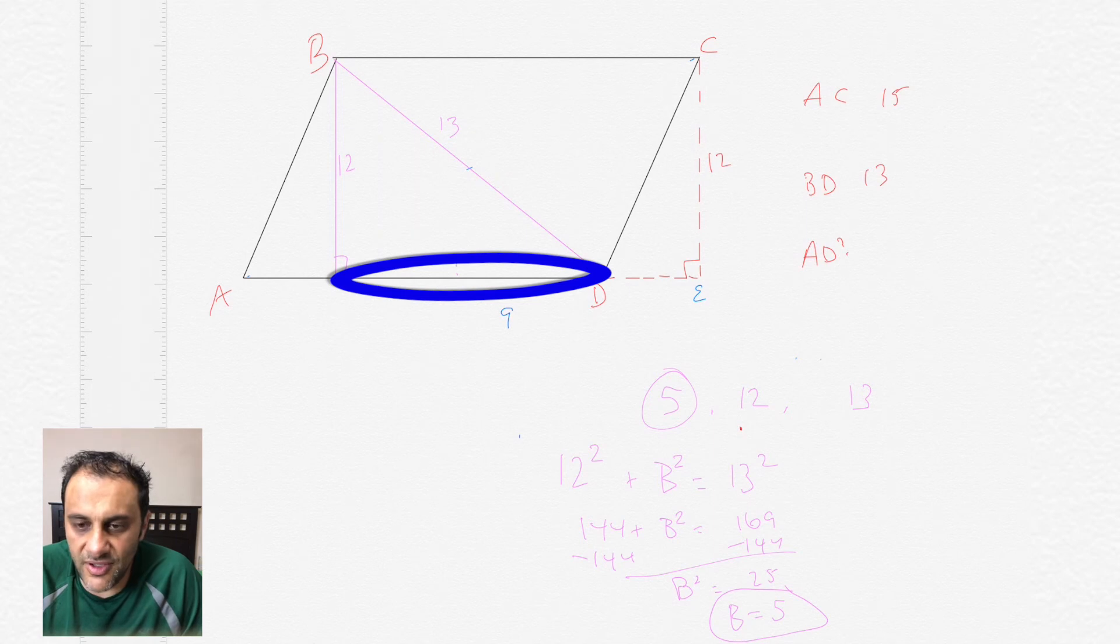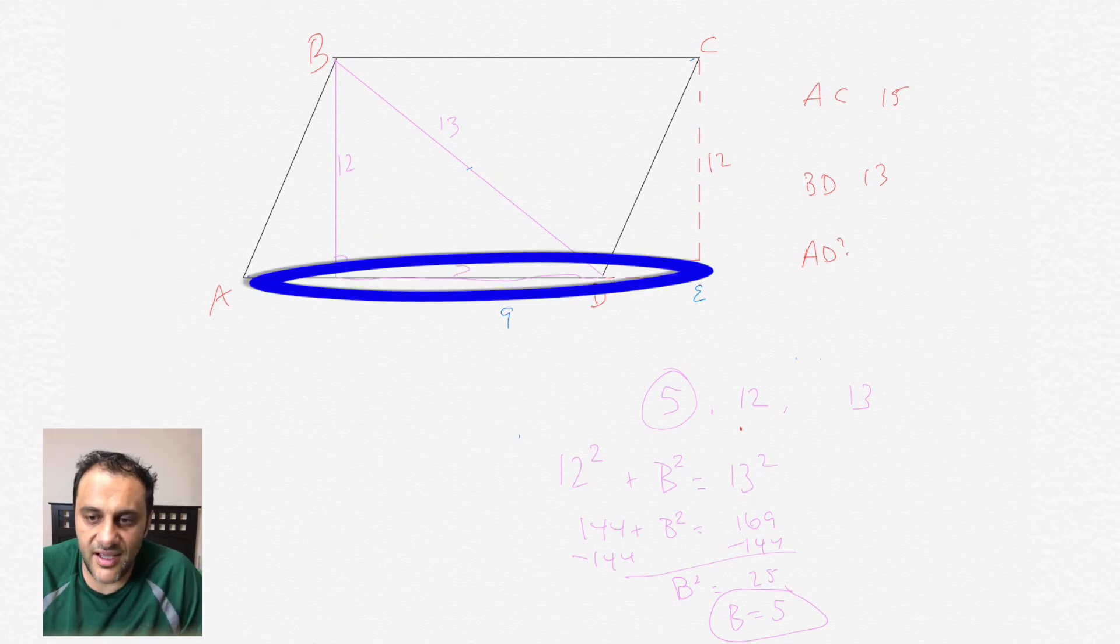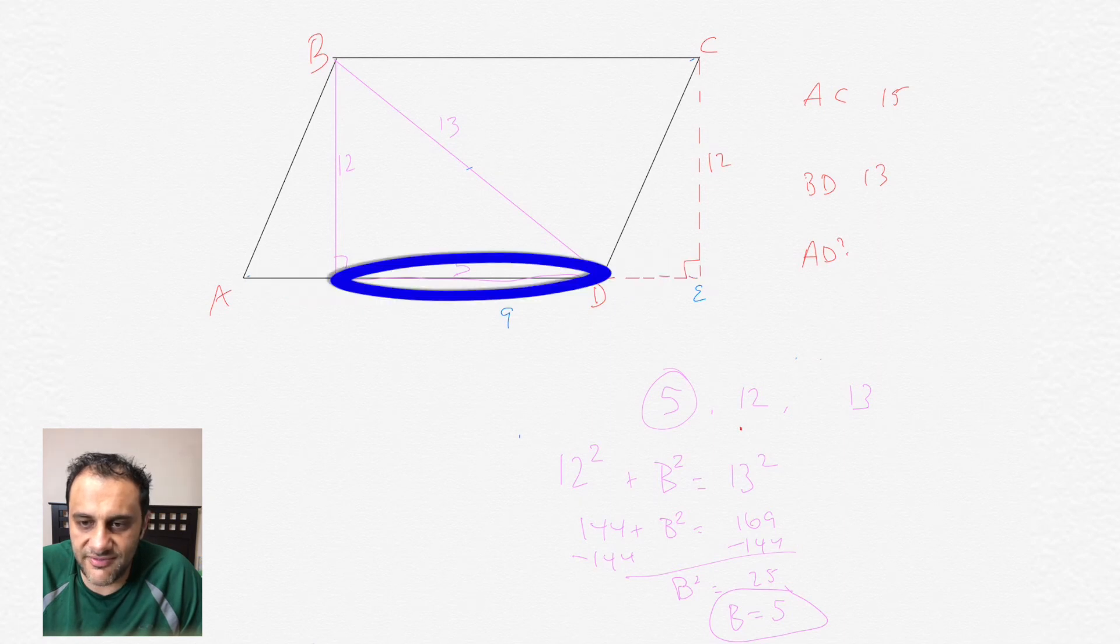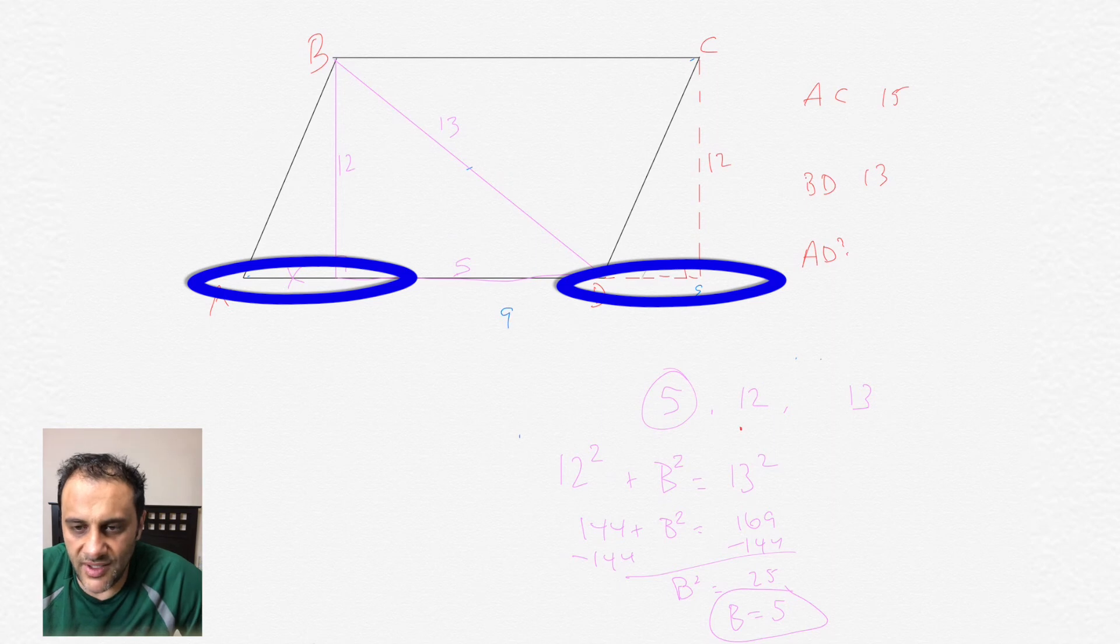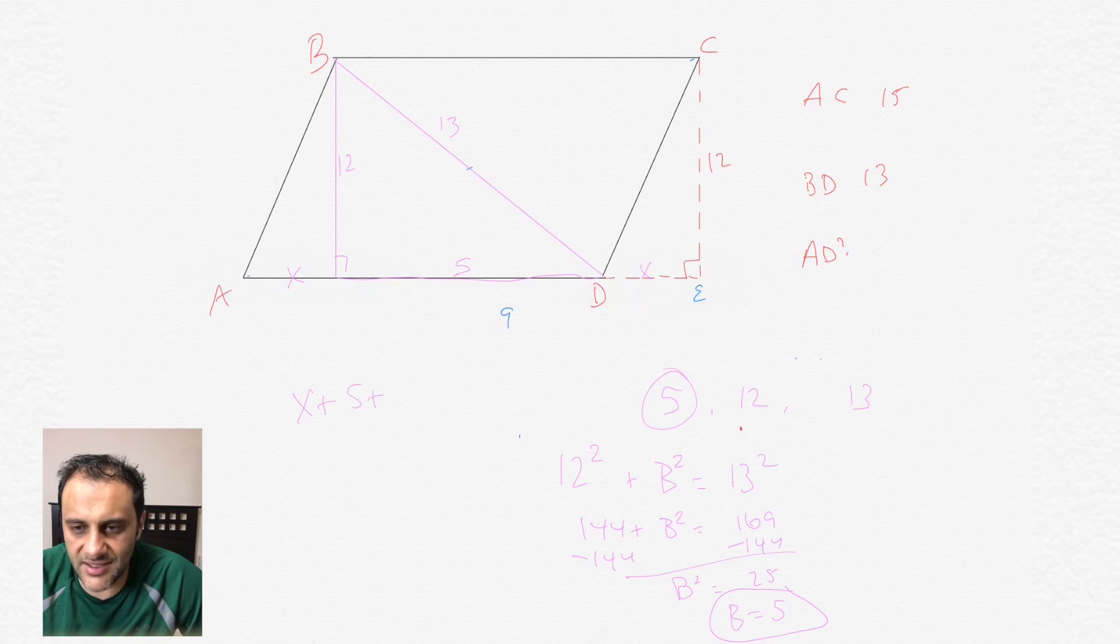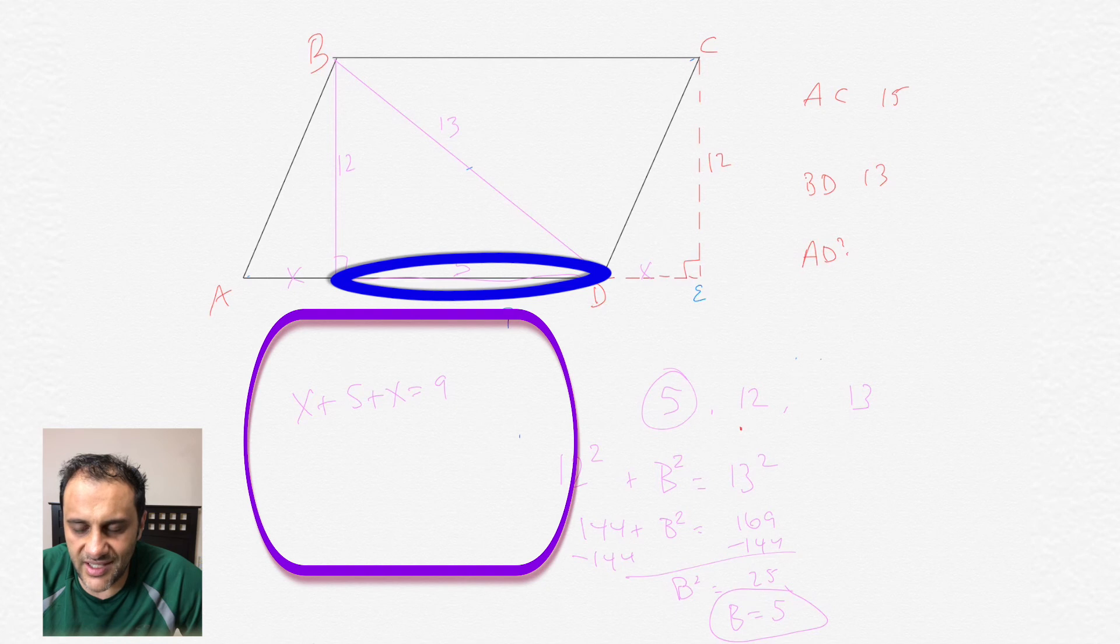Now, if you look closely, this whole line from A to E is 9, and that part is 5, and those two corners are equal right there because of that property of those two triangles that are equal. So let's call those two corners X and X. We would get X plus the middle, which is 5, plus X equals 9.